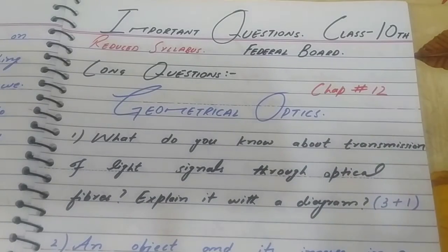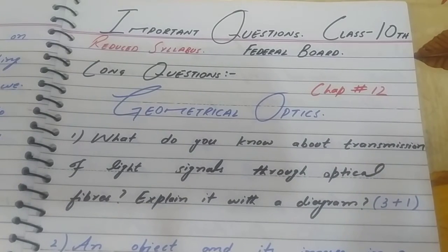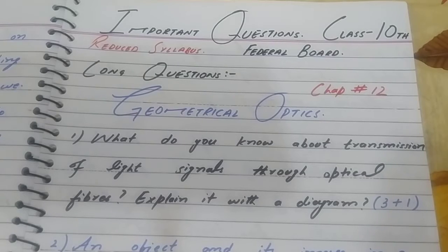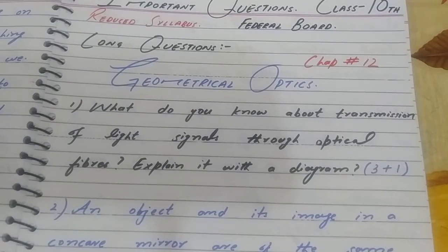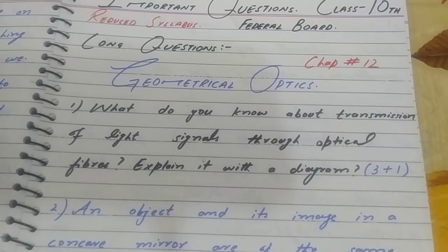Important questions of Class 10 Federal Board Physics. Let's start with long questions from Chapter 12, Geometrical Optics. First question: What do you know about transmission of light signals through optical fiber? Explain it with a diagram.